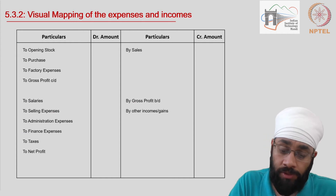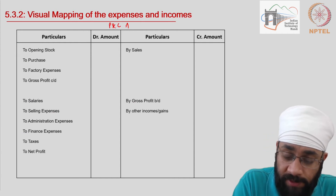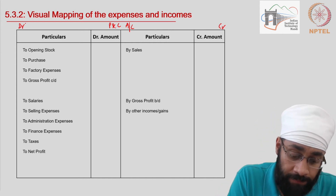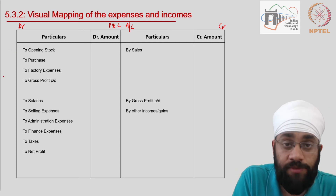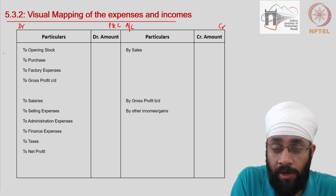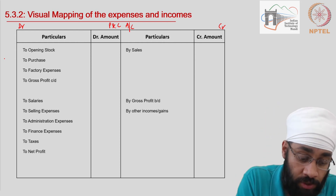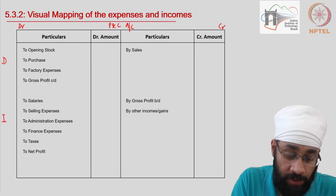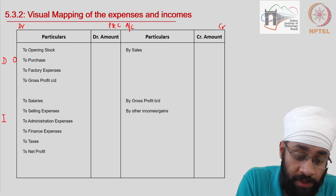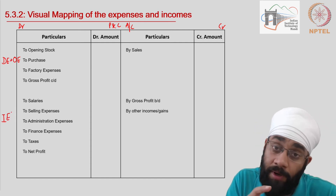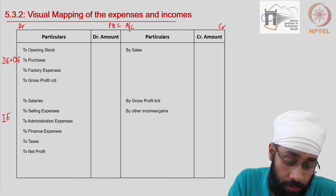Let's do a visual map. This is the profit and loss account sample format — you have a credit side and a debit side. In the first section, all the items you see are direct expenses in nature, and all the items are also operating in nature. So broadly, the first section covers all direct expenses, and the second section covers all indirect expenses. All direct expenses are also operating expenses — let me label these as DE and OE.